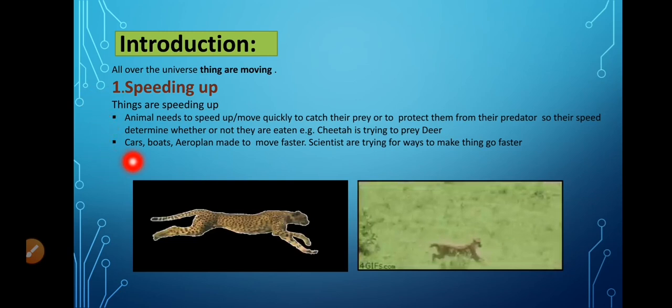Similarly, some manmade machines like cars, boats, aeroplane. These are made to move faster. So scientists are trying for ways to make the things go faster. So if we classify these types of things, they are speeding up.